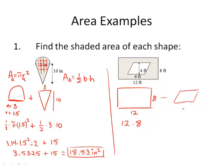And that is found by going 12 times 8. And the parallelogram is very similar to the rectangle formula. It's just base times height, 6 times 4, giving us 24. So we've got 96 square feet minus 24 square feet, giving us 72 square feet.